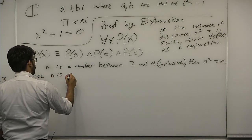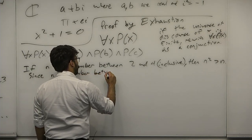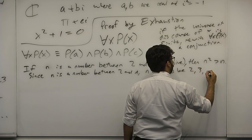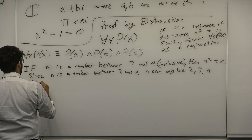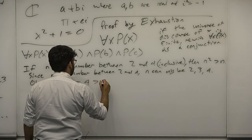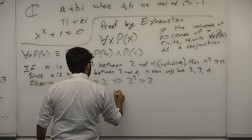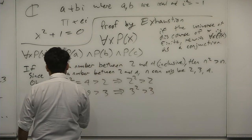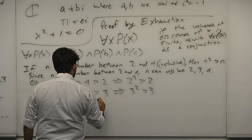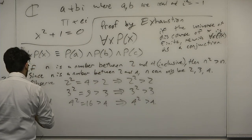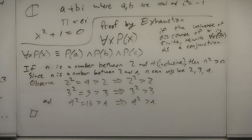Since n is a number between 2 and 4, n can only be 2, 3, or 4, so we prove each case. 2² = 4 > 2, so 2² > 2. 3² = 9 > 3, so 3² > 3. 4² = 16 > 4, so 4² > 4. QED. We broke it into easy cases because the domain was finite.